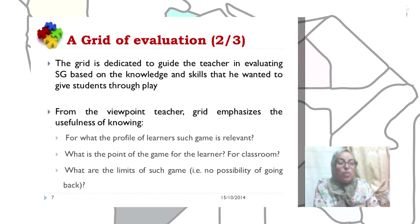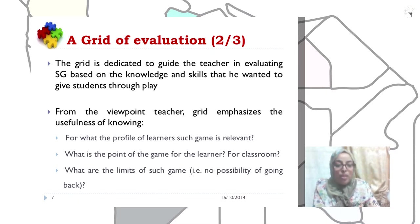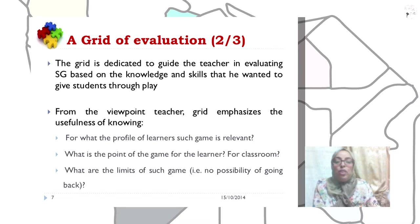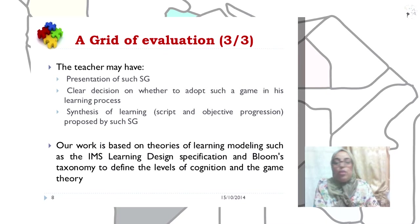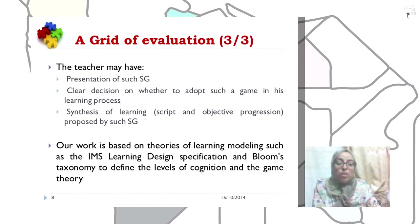The grid is dedicated to the teacher in evaluating serious games based on the knowledge and skills that he wants to give students through play. From the teacher's viewpoint, the grid emphasizes the usefulness of knowing: for what learning profile such a game is relevant, what is the benefit of the game for the learner in the classroom, and what are the limits of such a game, for example the possibility of going back. Through the grid, the teacher may obtain a presentation of the game, a clear decision on whether to adopt it in the learning process, and a synthesis of the learning script and objective progression proposed by the serious game.